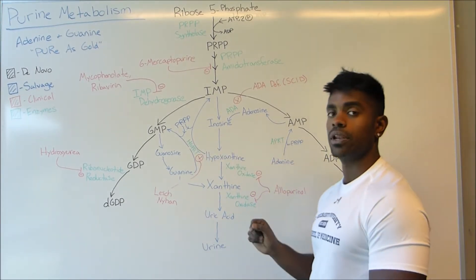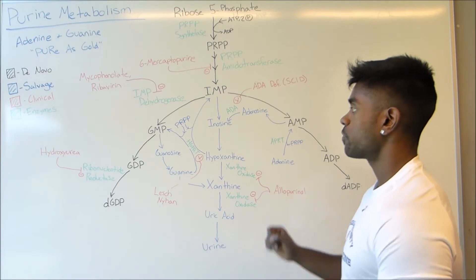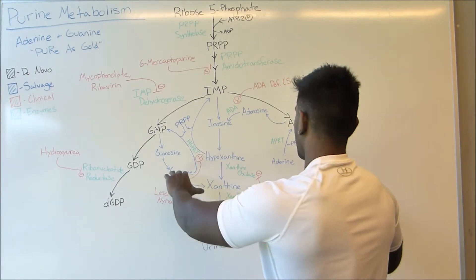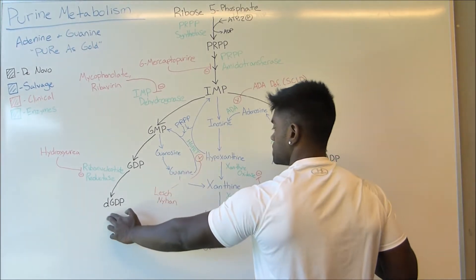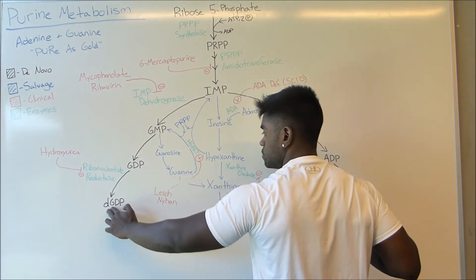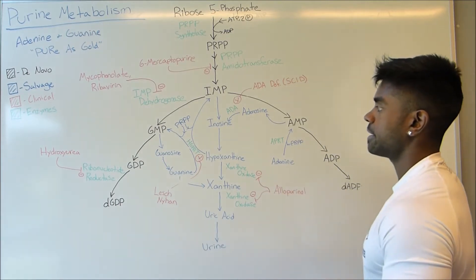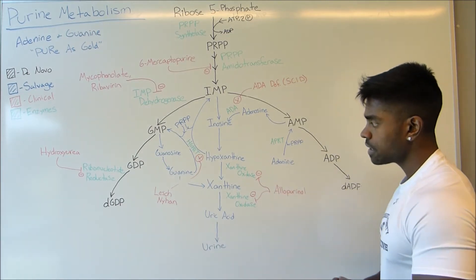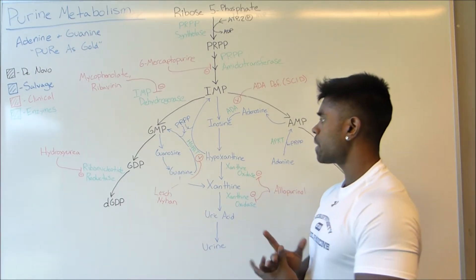You can see that HGPRT and APRT are very important for the salvage pathway. Therefore, these products can go back around and then form dADP and dGDP to be incorporated into the DNA. That sums up the salvage pathway.